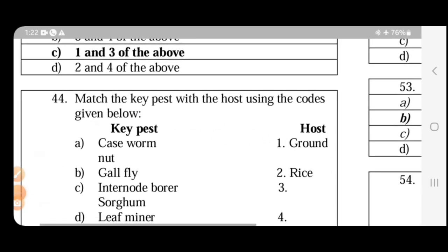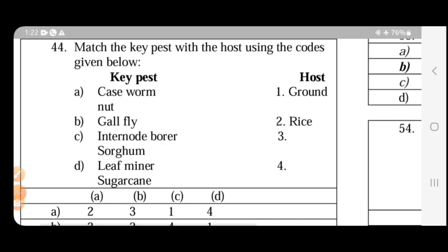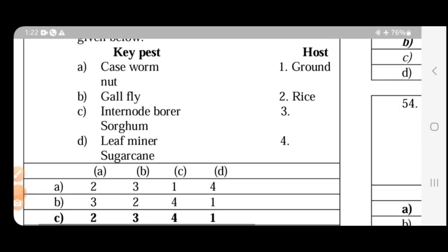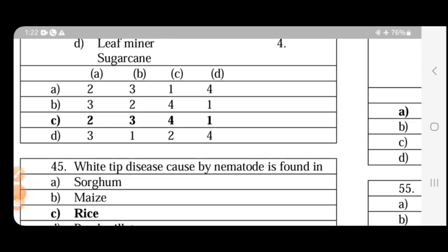Match the pests with the host using the codes given below. Caseworm is rice, gall fly is sorghum, internode borer you can use sugarcane, leaf miner is in groundnut.